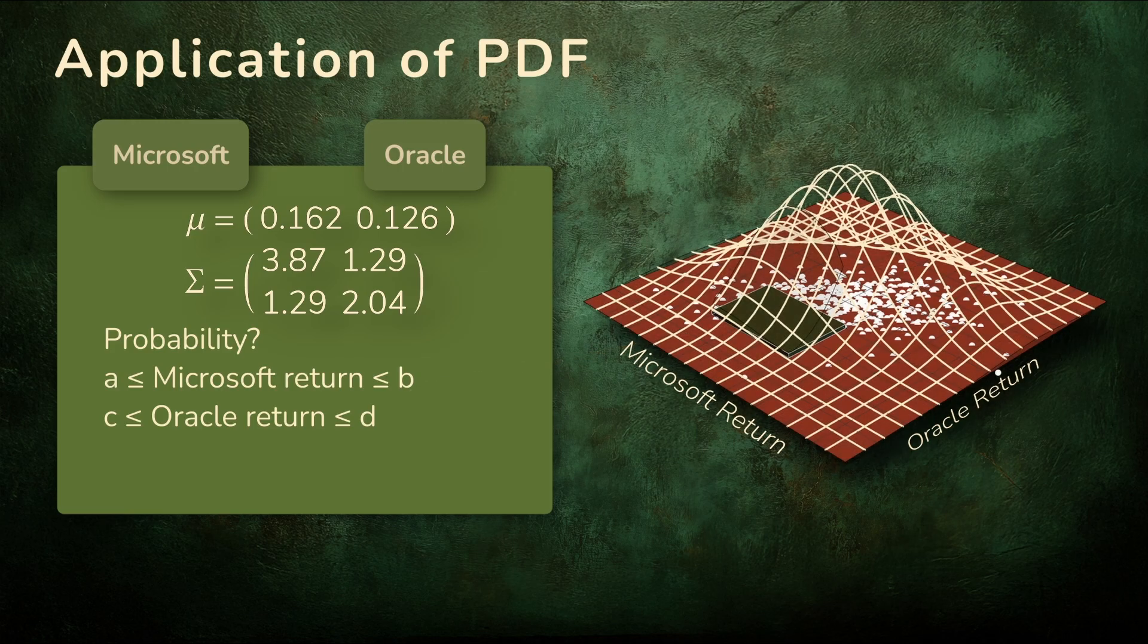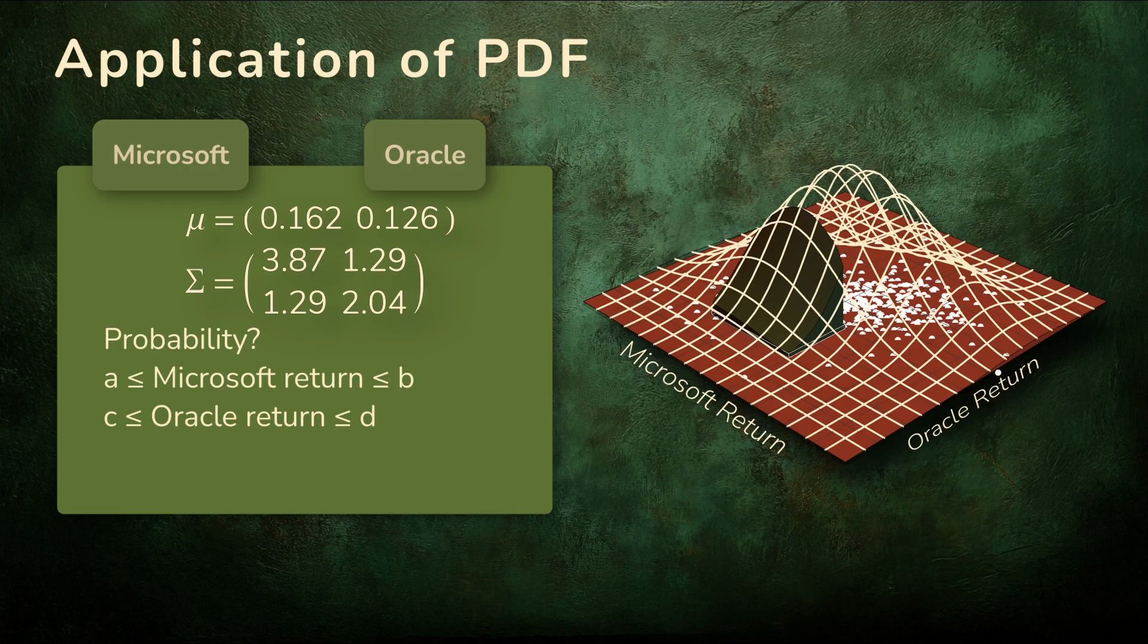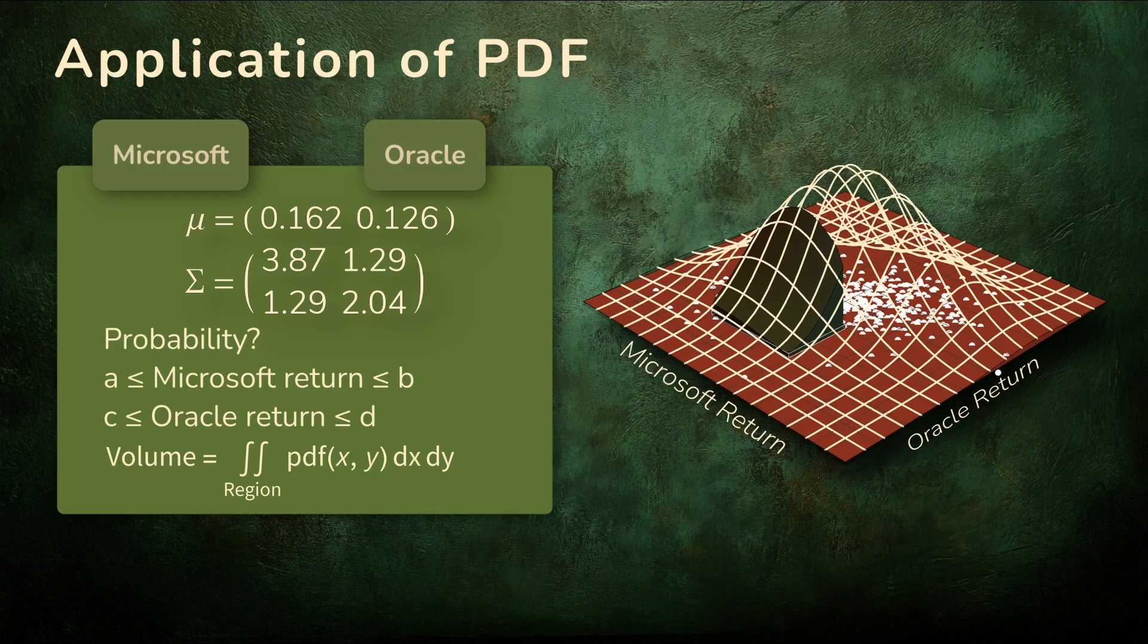To find the probability of being inside it, we integrate the PDF over that rectangle. In other words, we calculate the volume under the surface above that region, carry out the double integral, and we get the probability.